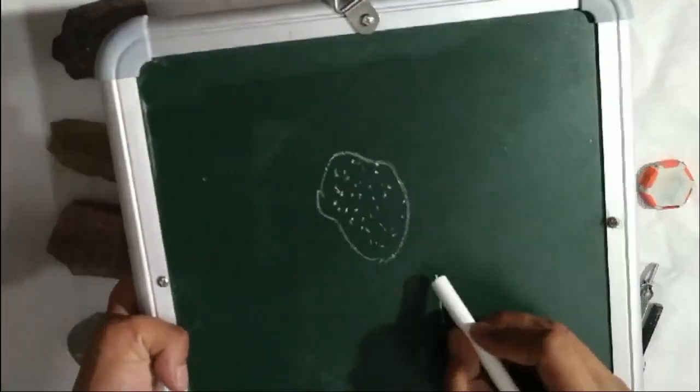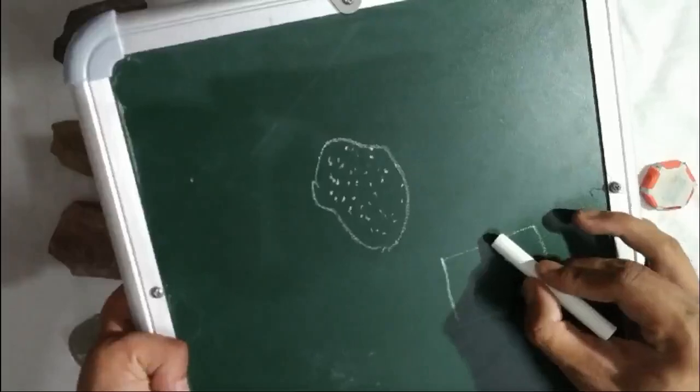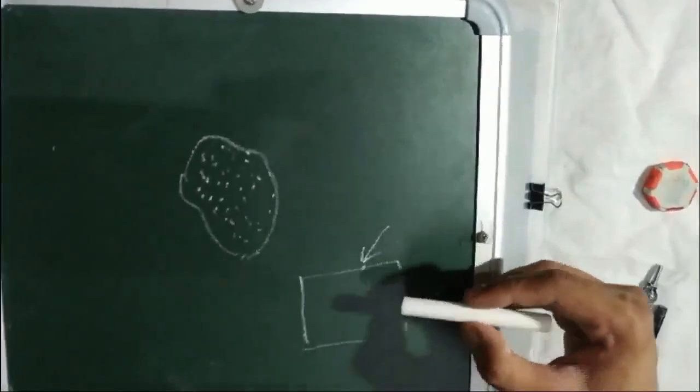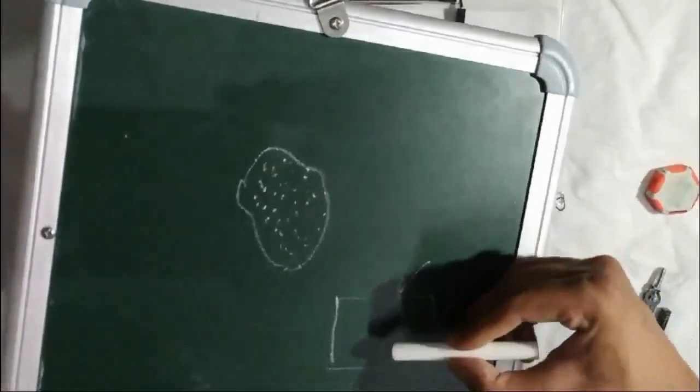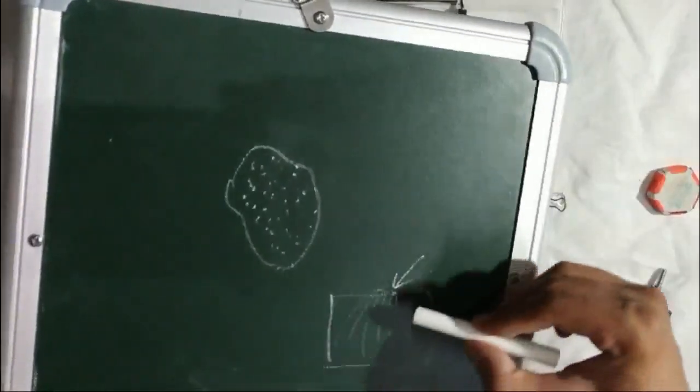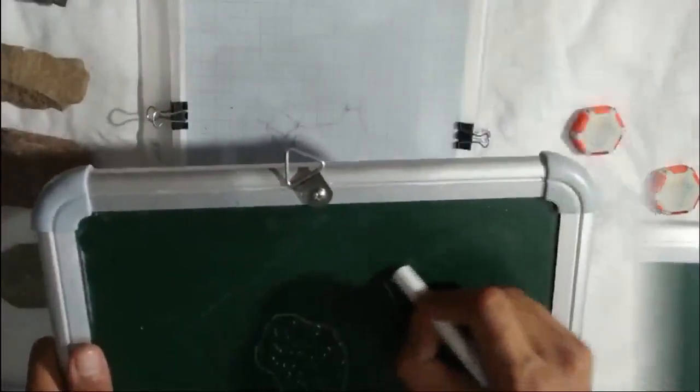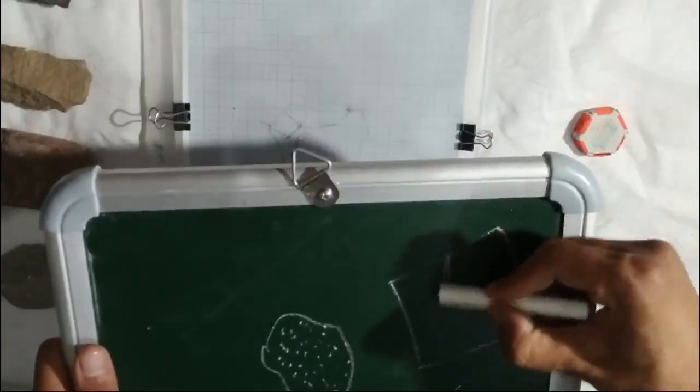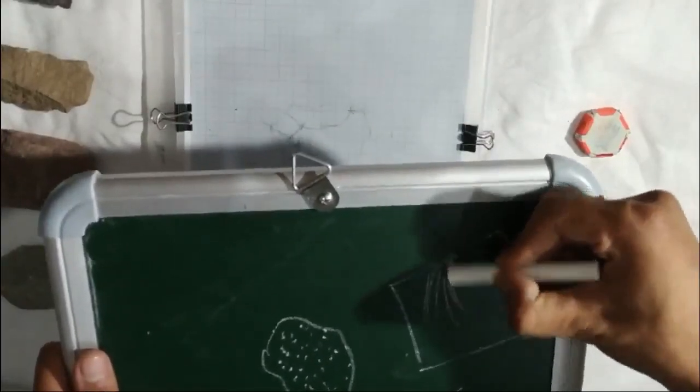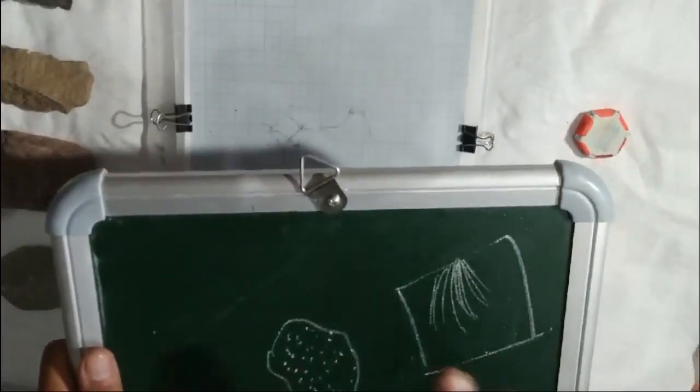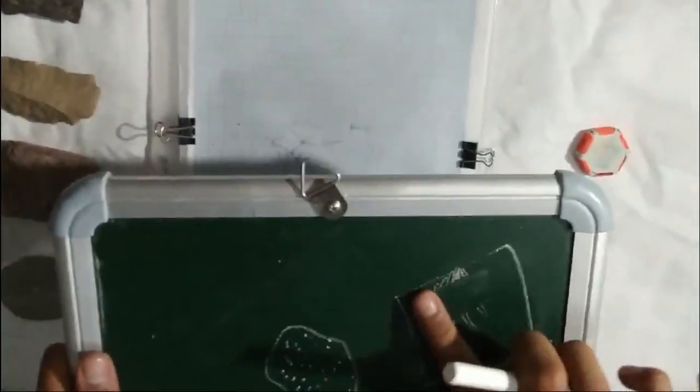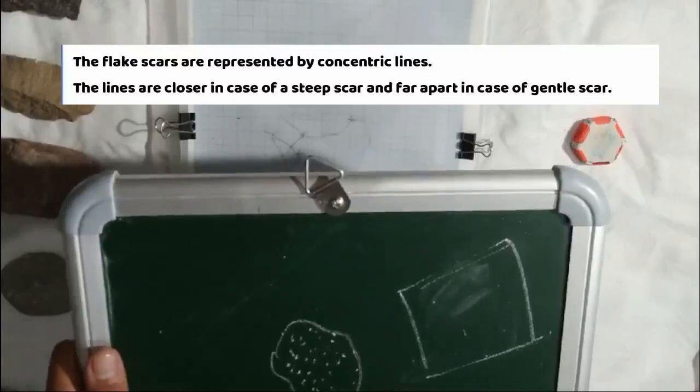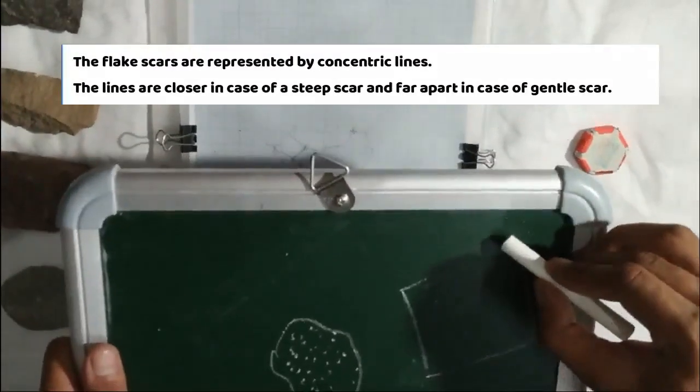Your flake scars are represented with lines that begin from the point of percussion and in the direction the force was applied. These lines are concentrated where the gradient is steep. And in case the flake has a gentler slope, the lines are further apart, just like how contour lines work.